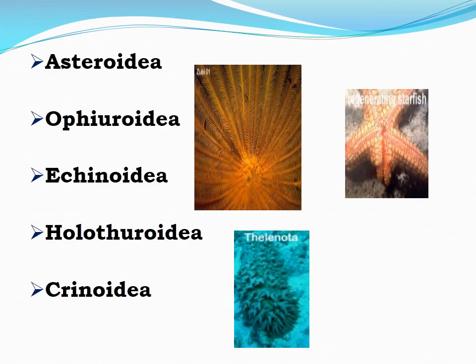Echinoderms are divided into five classes: class Asteroidea, class Ophiuroidea, class Echinoidea, class Holothuroidea, and class Crinoidea.